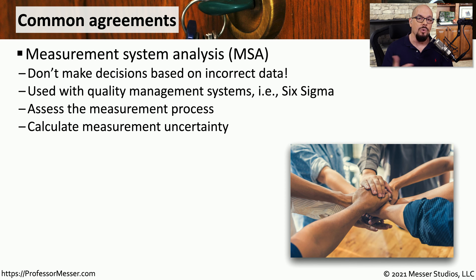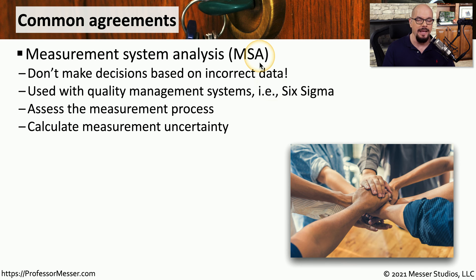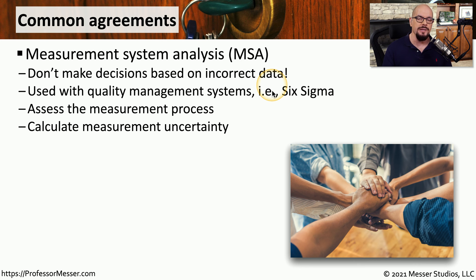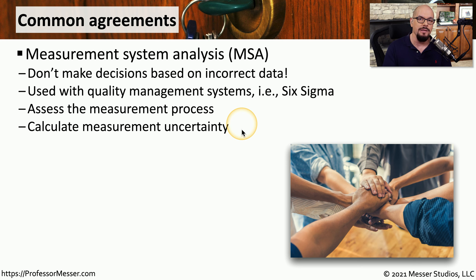If you're working with a quality management system such as Six Sigma, you may be familiar with a measurement system analysis, or MSA. This provides a way for a company to evaluate and assess the quality of the process used in their measurement systems. If you're making business decisions based on a measurement system, it's good to know that the measurement system itself is accurate. The MSA will assess the measurement process and calculate any uncertainty present during measurement.